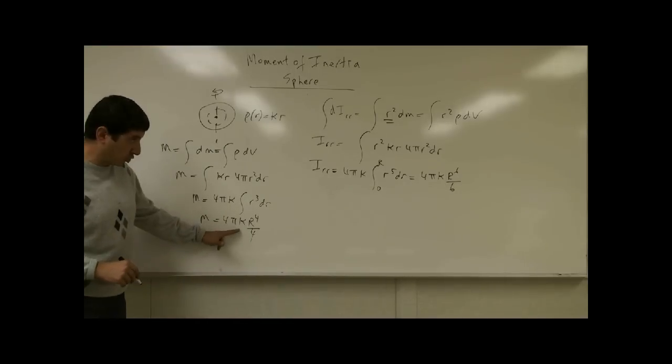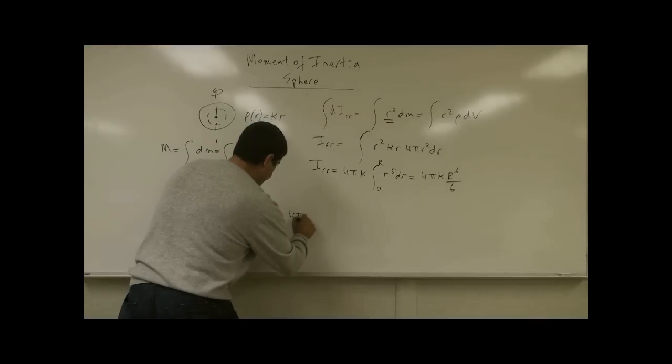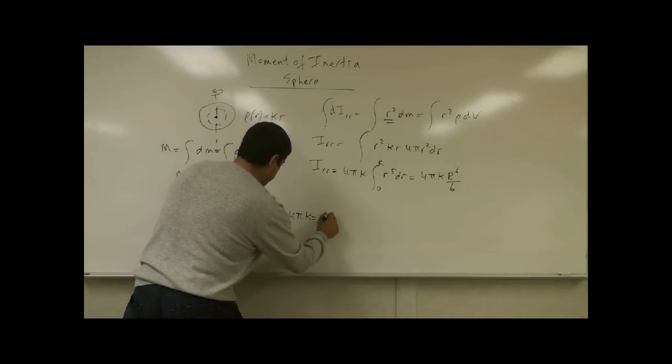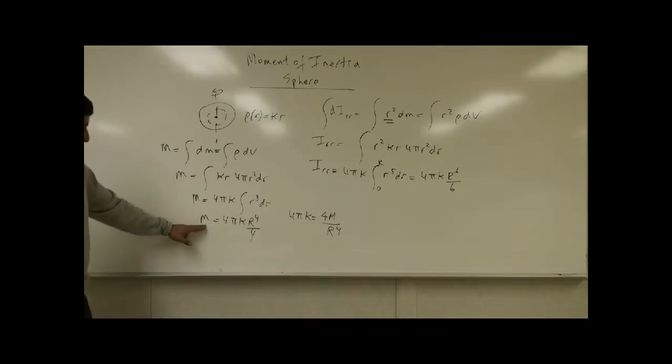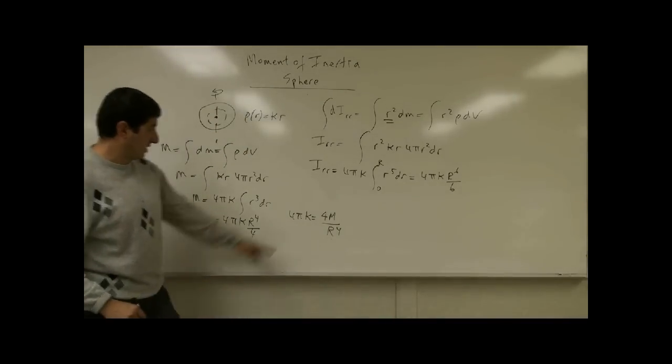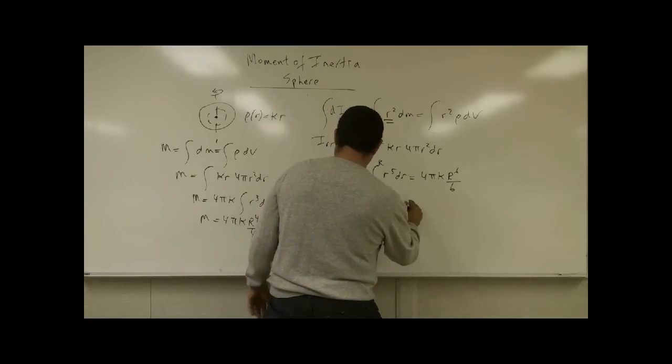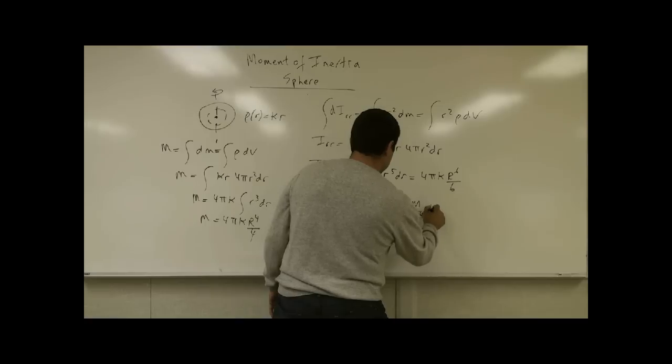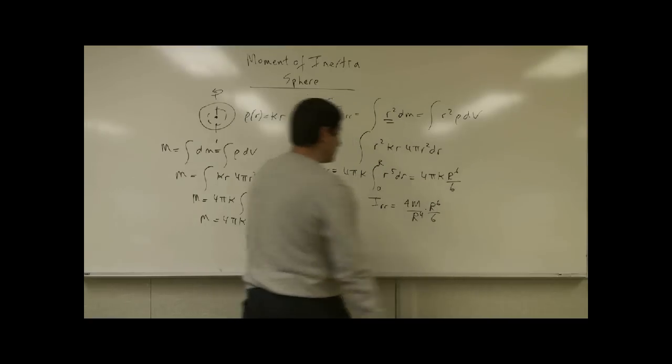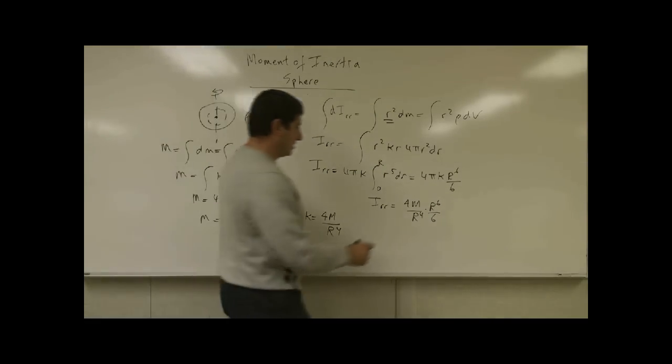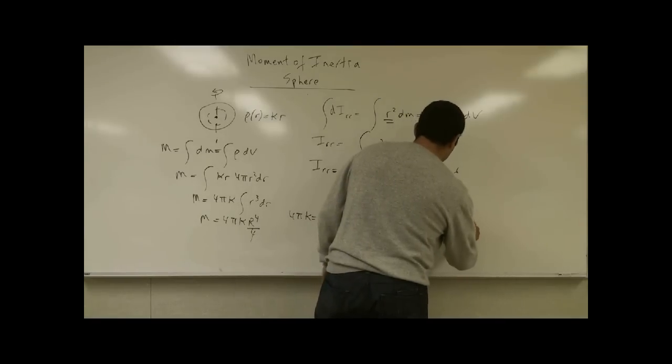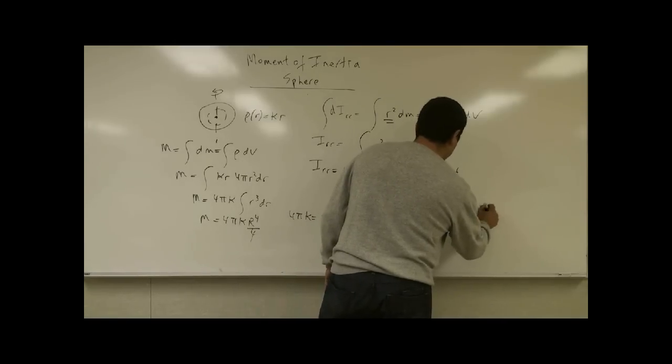Again I'm going to substitute 4 pi kappa is equal to 4 m over r to the 4th. 4 goes over there, r to the 4th goes down, substitute that over there. 4 m over r to the 4th, r to the 6th over 6. Then you get 2 thirds m r squared.